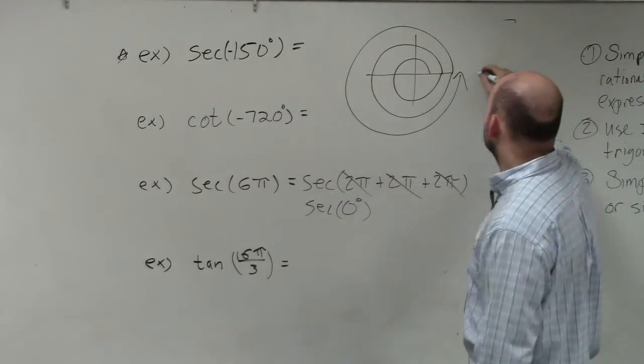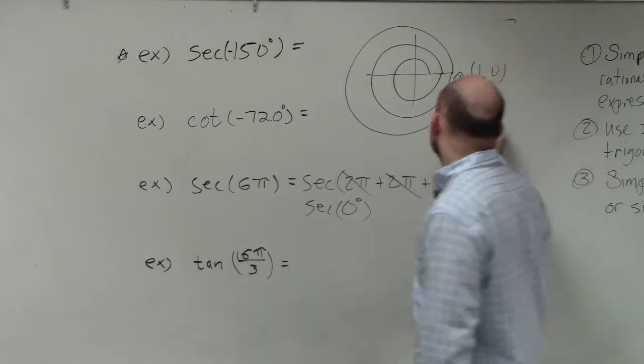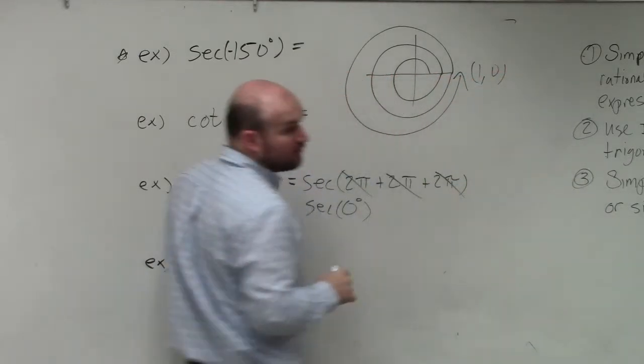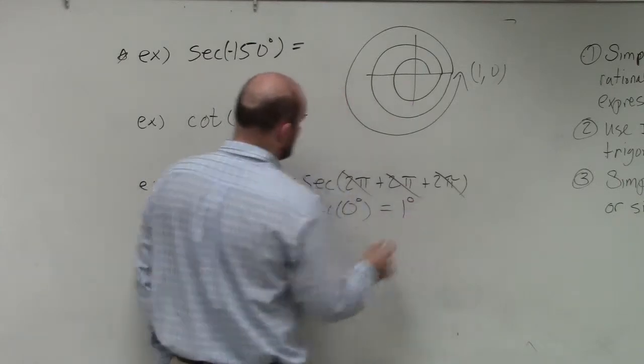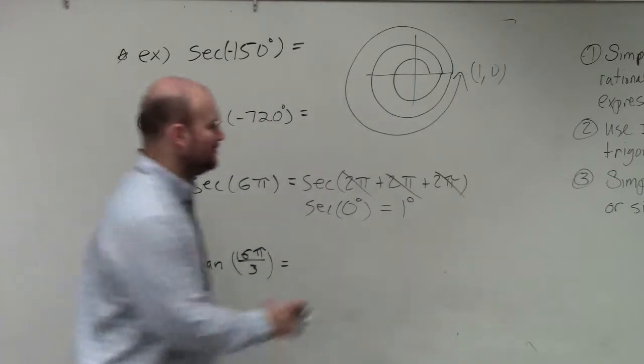So it's secant of 0 degrees, which again is (1,0). The secant is 1 over x. x in this case is 1. So the secant of 0 degrees or 6π is just 1.